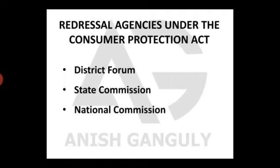The Consumer Protection Act was implemented in the year 1986 to protect the consumer from exploitation done by businessmen to earn more profit. Sometimes to earn this profit they also used to harm consumers through very dangerous or toxic products. The Consumer Protection Act 1986 has specified various consumer rights and responsibilities.